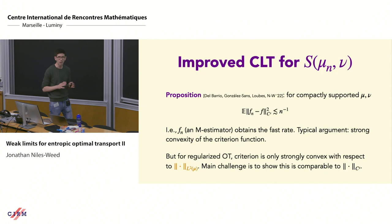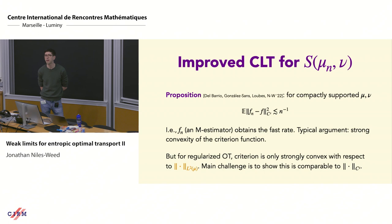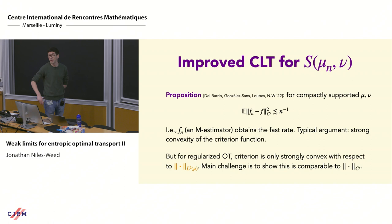The proof described was based on an empirical process argument, but fast rates can sometimes be established using convex optimization arguments. That's very interesting — taking an algorithmic view to prove the fast rate. That's not what we did, but Rigollet and Stromme's concurrent proof is closer in spirit to a convex optimization proof, so perhaps it proceeds along those lines.